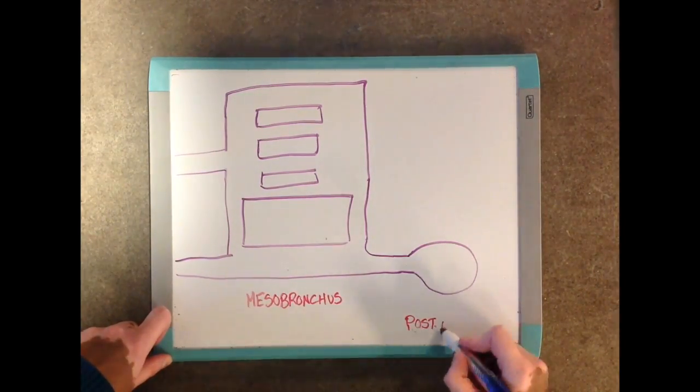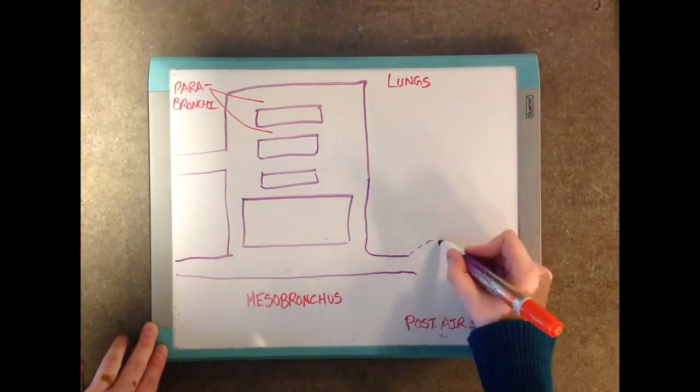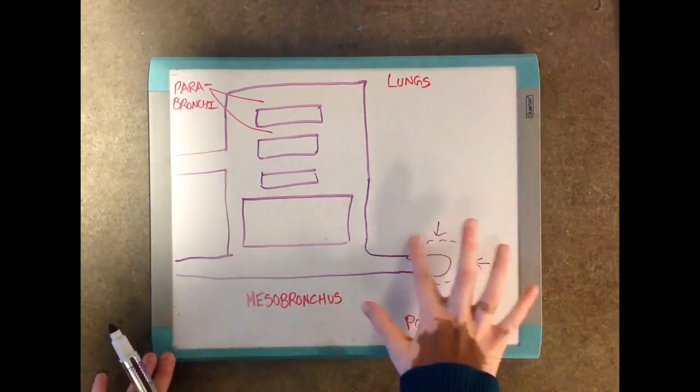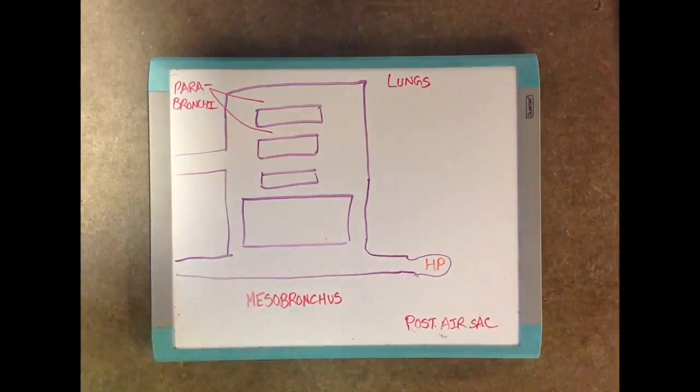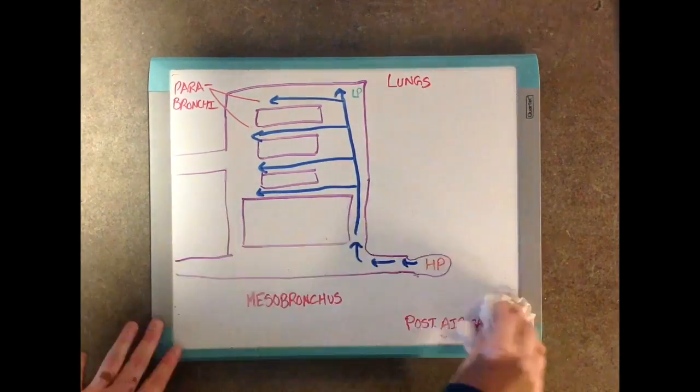However, in first expiration, the chest muscles cause the posterior air sacs to get smaller, increasing the pressure in the sacs, forcing the air into the parabranchi of the lungs. This is where gas exchange occurs.